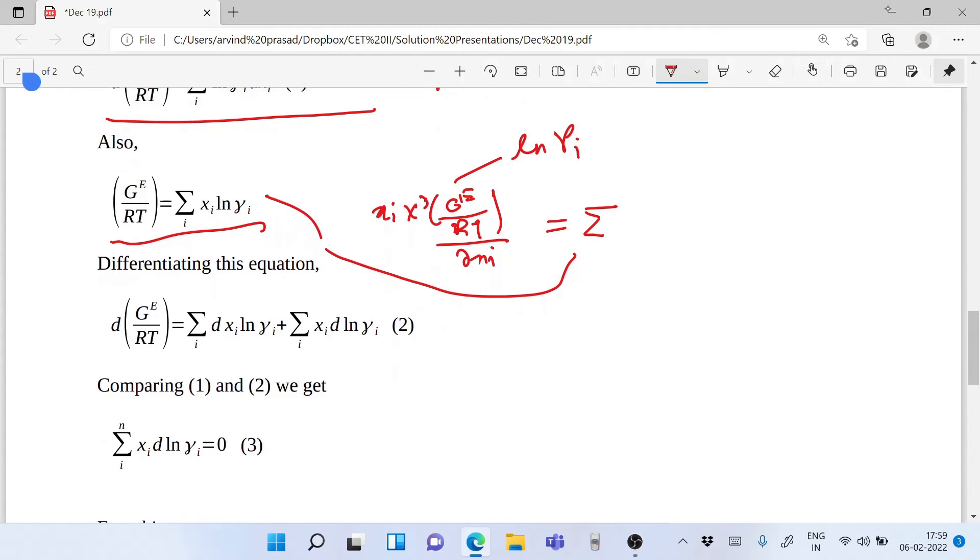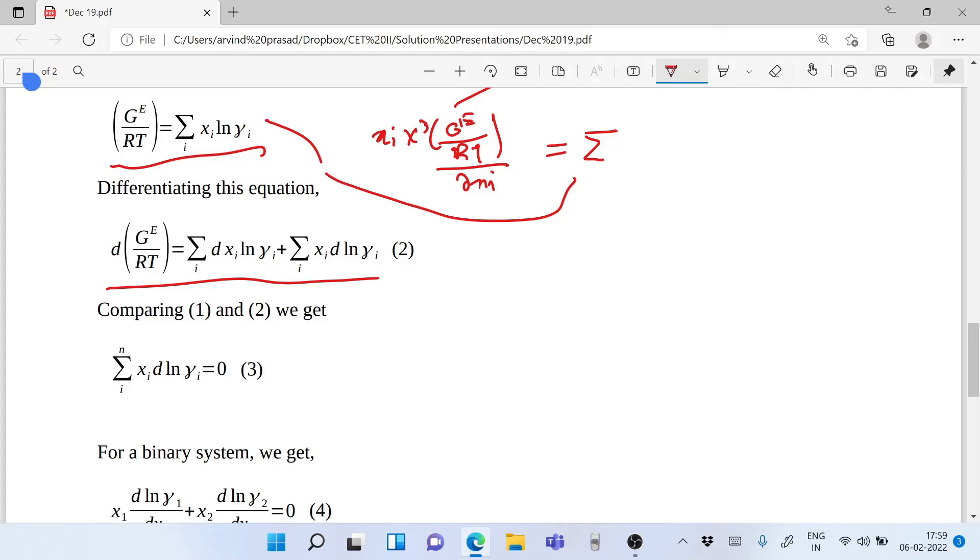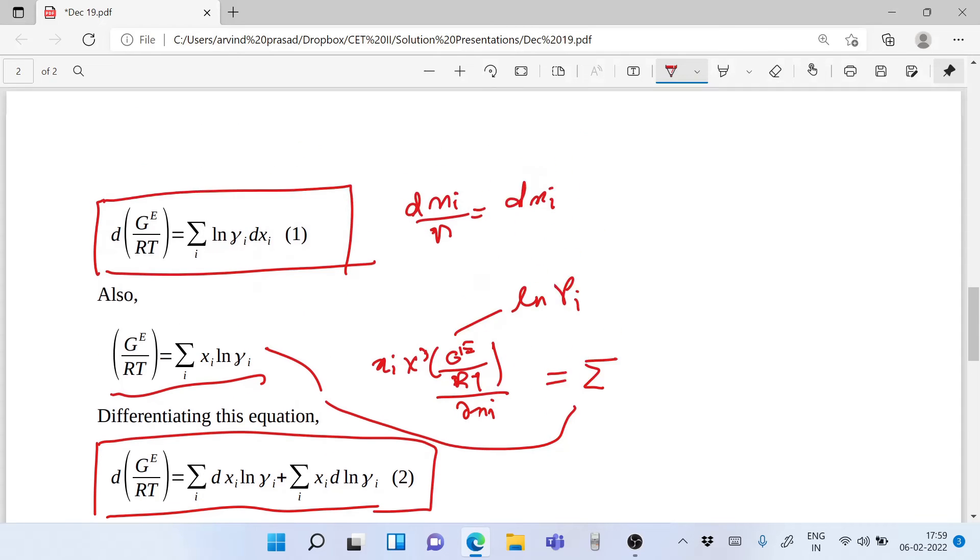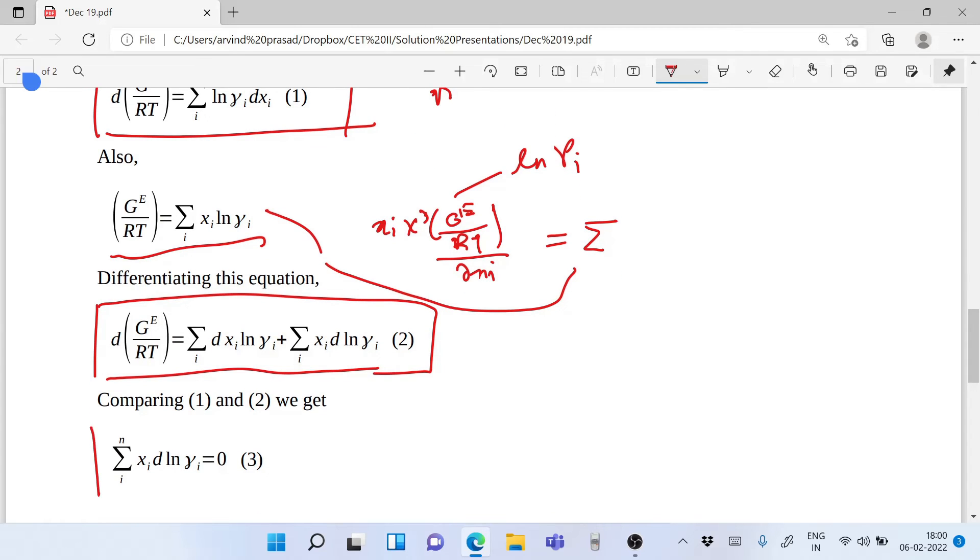Also, by definition, the excess Gibbs free energy of the mixture can be written as summation of the mole fractions multiplied by the partial Gibbs free energy. Partial NGE by RT over partial NI is nothing but ln gamma I. So this is going to be summation of Xi into ln gamma I. If we differentiate this equation, we get it this way. First time we differentiate it with respect to X and the second time with respect to ln I, or ln gamma I. We have equation number 1 here and equation number 2 here.